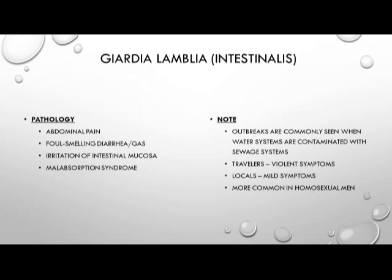Symptoms of Giardia lamblia include abdominal pain, foul-smelling diarrhea or gas, irritation of the intestinal mucosa, and malabsorption syndrome. Outbreaks are commonly seen when water systems are contaminated with sewage runoff or sewage waste, and travelers who contract Giardia lamblia typically have more violent, aggressive symptoms than locals. It is also common amongst the homosexual male community.